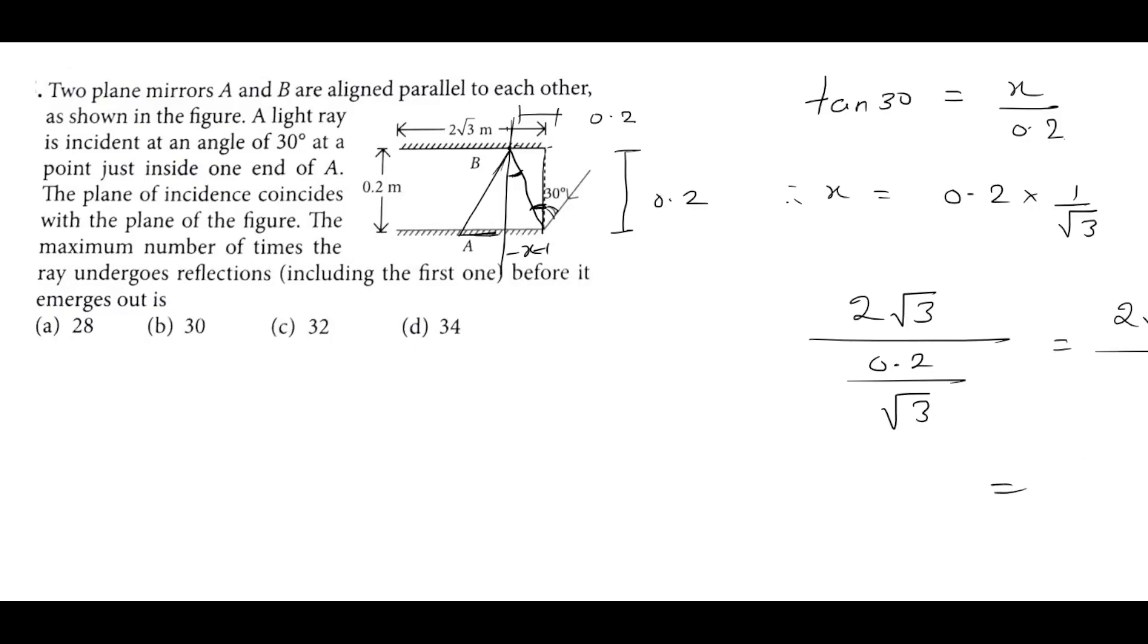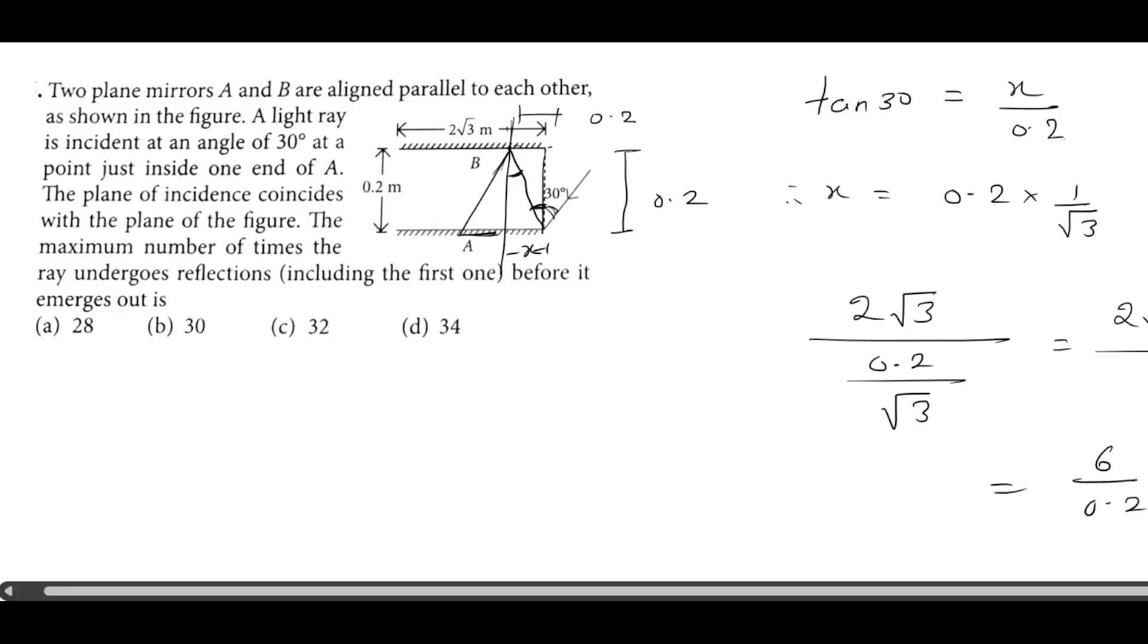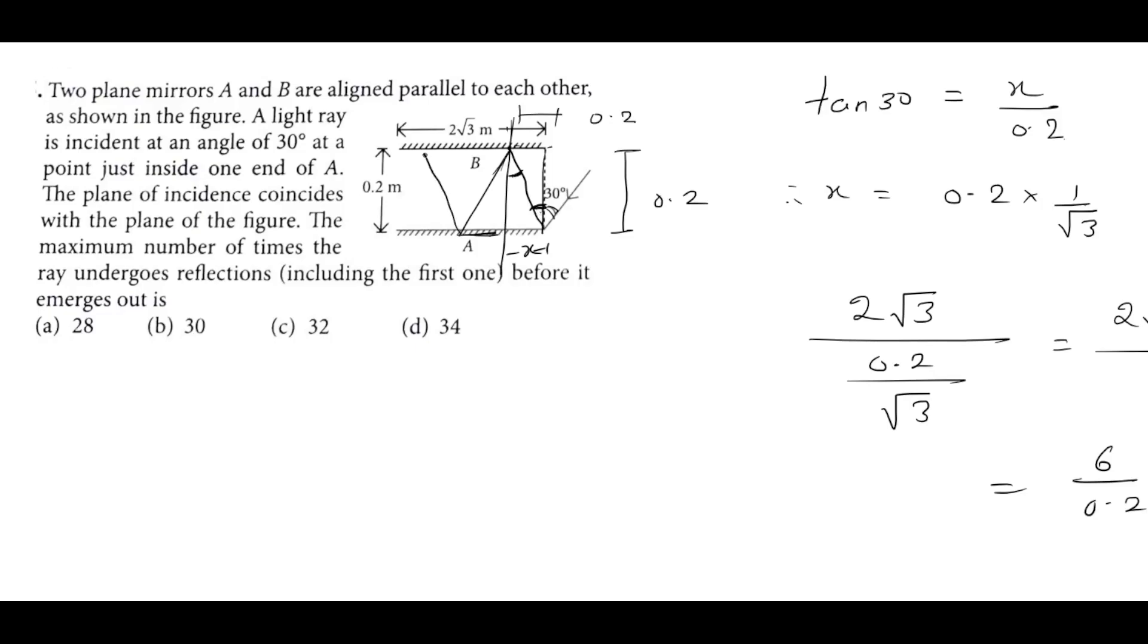So root 3 times root 3 is 3, then 6, 6 divided by 0.2. So here we have 2, 3, so here we have 30. So here we have this reflection, so the answer is 30.